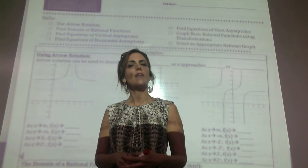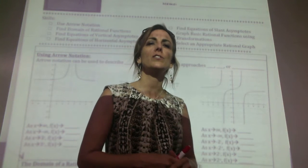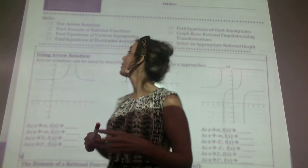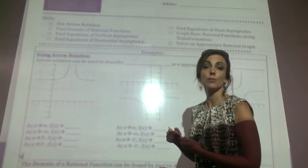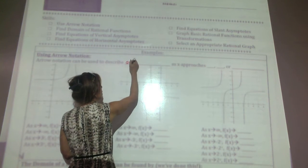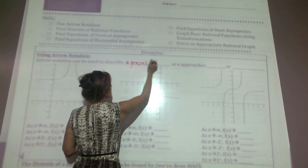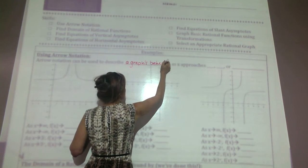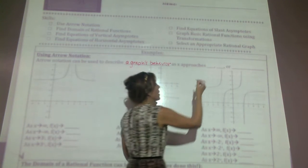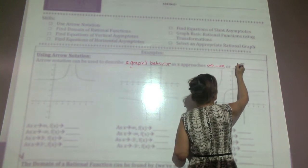In today's video we're going to focus on the use of arrow notation. We use arrow notation to describe what a graph is doing — typically to describe a graph's behavior as x approaches positive infinity, negative infinity, or some constant.